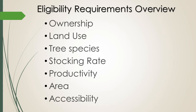By statute, for land to be classified as forest land it must have a minimum of 15 contiguous acres of forested land. That area must be covered in eligible softwoods with a stocking rate meeting the 100 board feet per acre and 10% crown coverage requirements. If there is a home site within that parcel, that acre cannot count towards the forest land acres, so there still must be 15 contiguous acres of qualifying forested land.